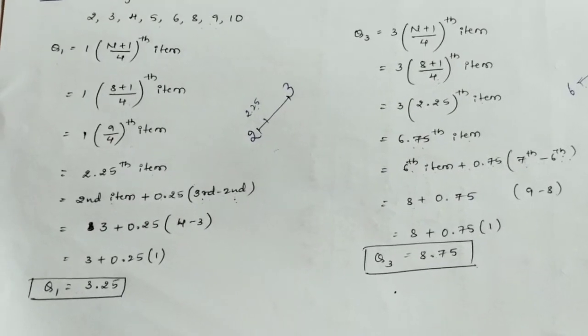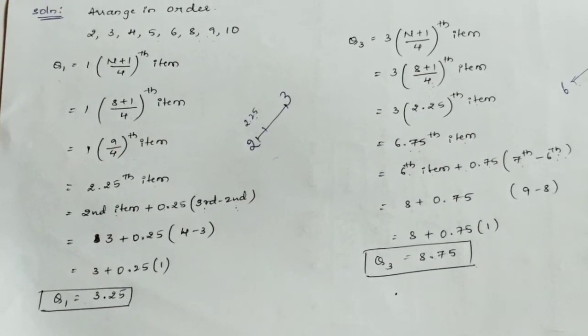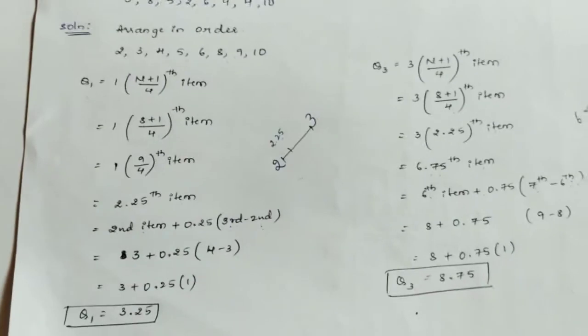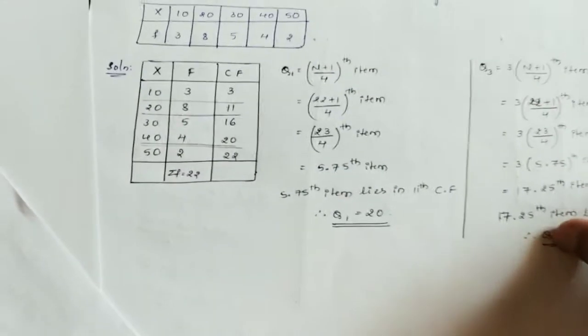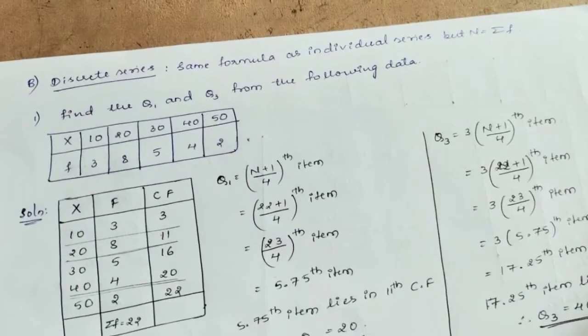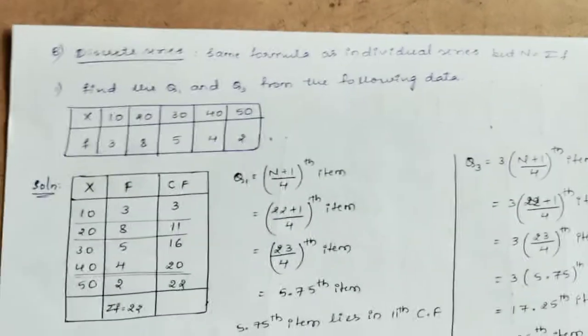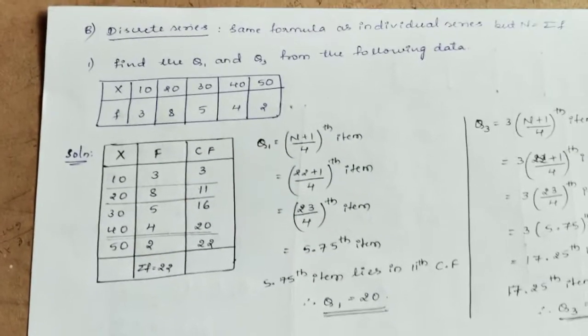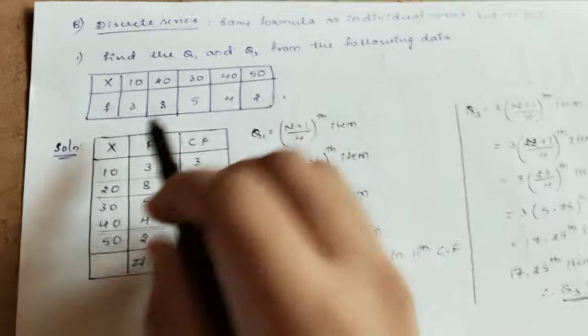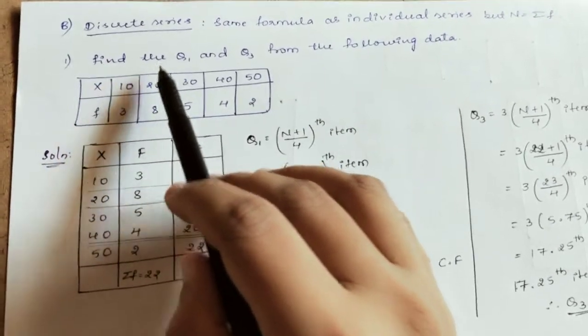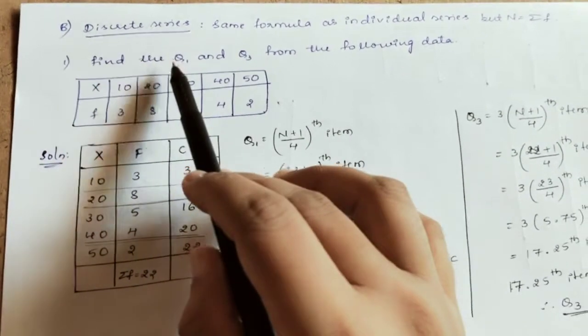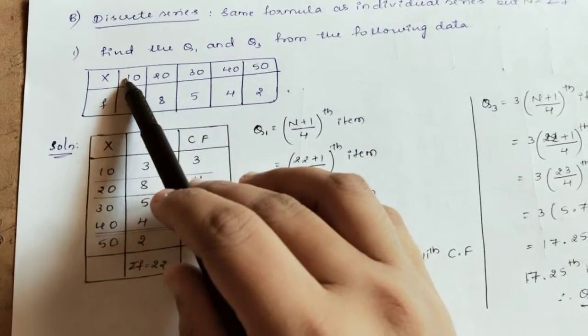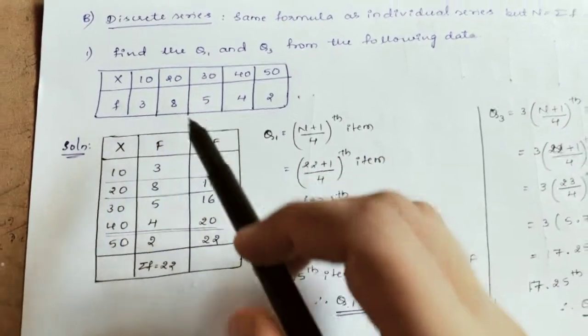This is how we calculate the Q1 and Q3 quartile values for the individual series. Next we will move on to the discrete series. Discrete series is easier. Find the Q1 and Q3 quartile values for the following data.